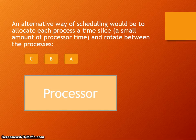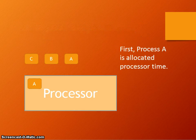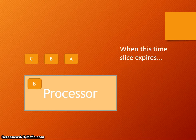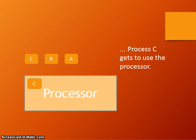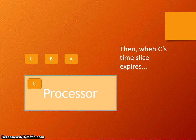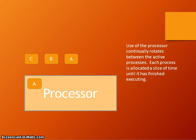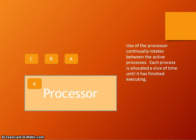With time slicing, each process is allocated a small amount of processor time — a time slice — and they rotate. Process A gets a small amount of processor time; when that expires, process B gets a slice; when that expires, process C gets some processor time; then it goes back to A again. The processor continually rotates between active processes, each allocated a small slice of time until all execution finishes. This makes it appear that many processes are taking place simultaneously, giving us the sense of multitasking.